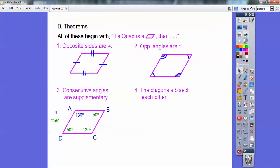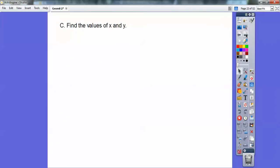And then the last one is that the diagonals bisect each other. Well, if the diagonals bisect each other, it means it cuts them into two equal pieces. So those guys are equal, and those guys are equal. These guys don't equal these guys, unless it's a rectangle or a square. But the diagonals bisect each other, so it cuts them into two equal pieces.